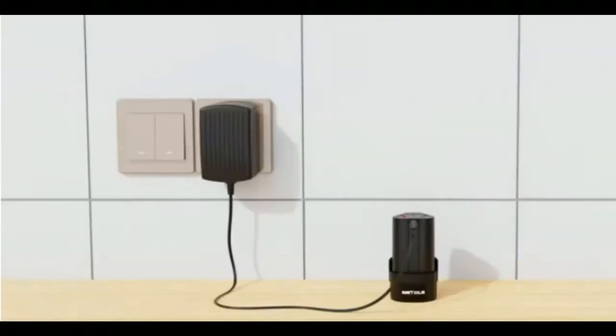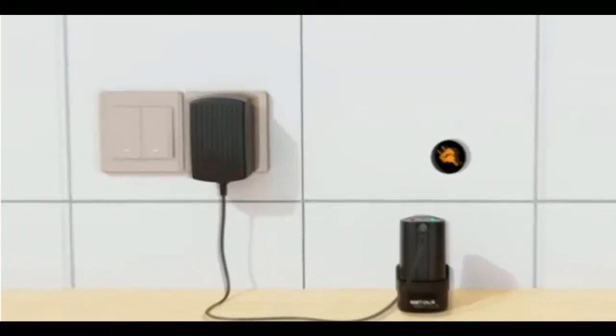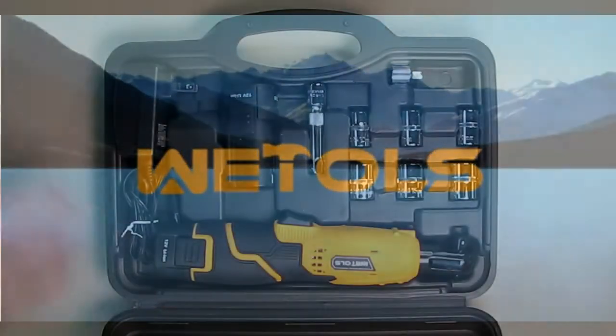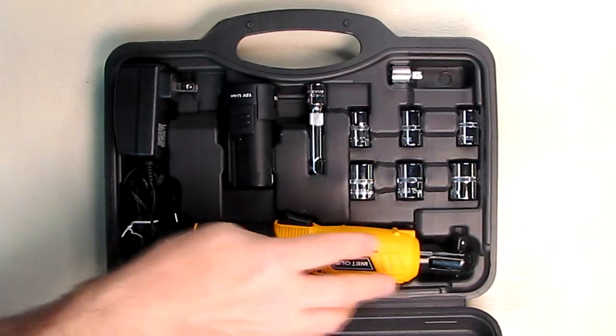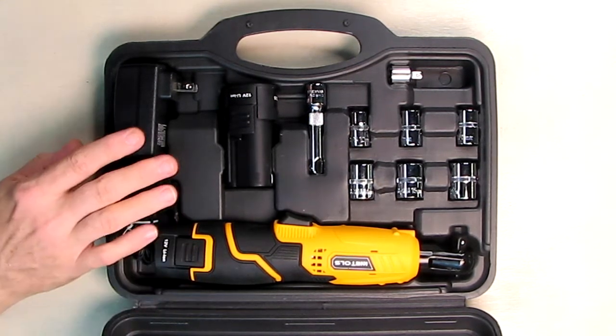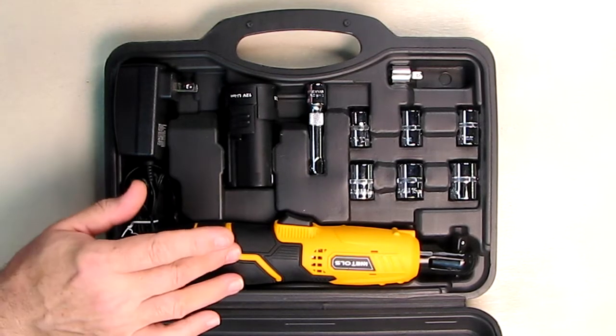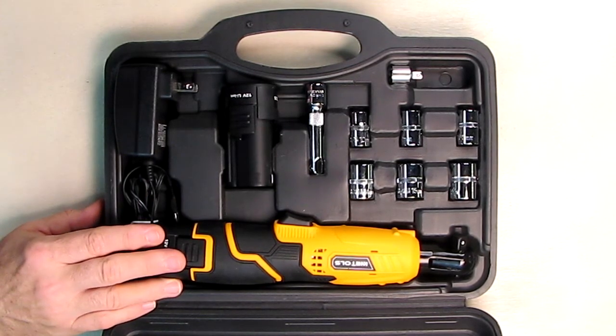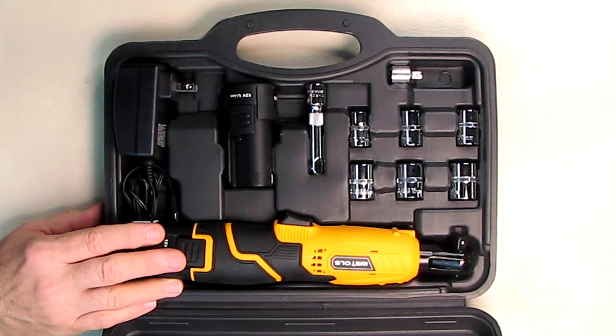We're also going to show you how this can be used as a socket wrench so that you can torque things down without using the motor. You get the ratchet wrench, the storage box, the fast charger, the two 12 volt lithium-ion batteries, the six sockets (10, 12, 13, 14, 15, 17 millimeter), the extension bar, and the 3/8 to one quarter inch converter.